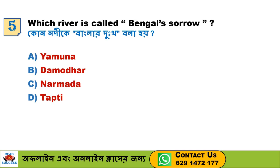Next question: Which river is called Bengal's sorrow? A. Yamuna, B. Damodar, C. Narmada, D. Tapti. Option B, Damodar, is the correct answer.